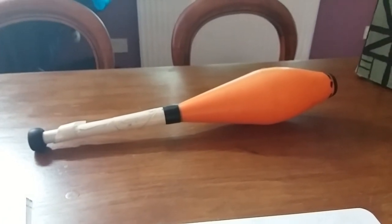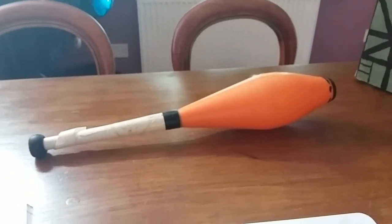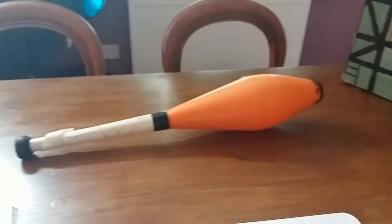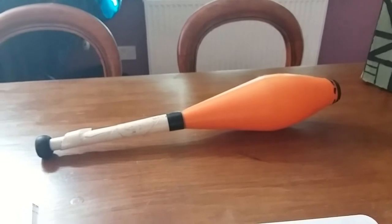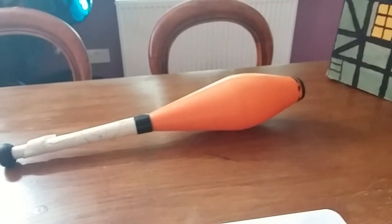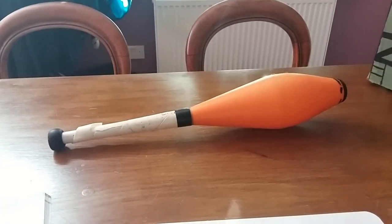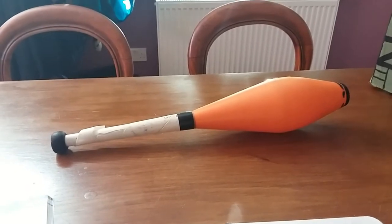Right, we're going to talk about things that have a non-uniform distribution of their density. So this is a juggling club. Now, as you can probably imagine, the mass is mostly up at one end of it, up in the orange end here. They are off balance. That's what we're going to be dealing with today.